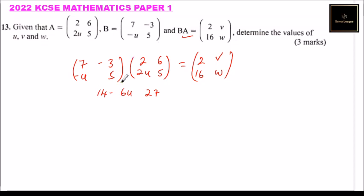Minus u times 2 is minus 2u, plus 5 times 2 is plus 10. Minus 2u plus 10 will be left with, we'll be left with 8u. Then we have minus u times 6 is minus 6u, plus 25. So that is BA is equals to, let's put that bracket correctly.